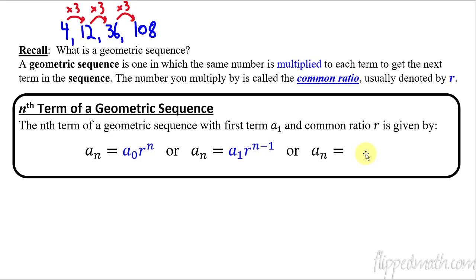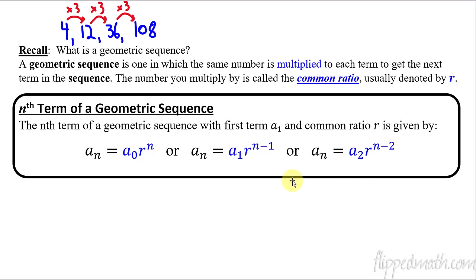Here's just another way: you could really start with any term you wanted. If you start with the second term, you would say r raised to n minus 2. If you start with a fifth term, your rule would be the fifth term times r raised to n minus 5. It doesn't matter which term you start with, as long as r raised to the appropriate power correlates with it. Let me show you an example of how to use this.